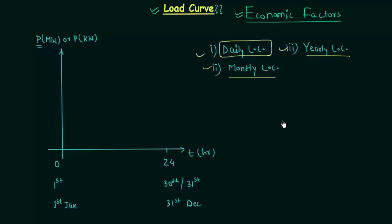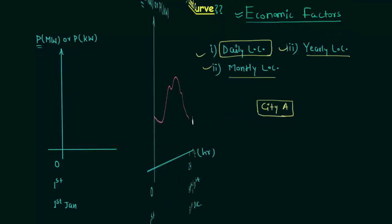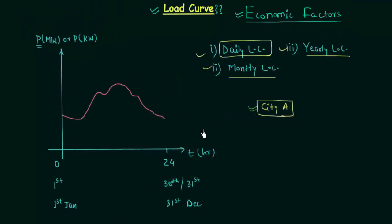Now I will plot the daily load curve for city A. You can see the load curve of city A from 0 hours to 24 hours — the plot is varying, so the load curve is a variable plot. The power demand varies continuously with time. In the morning you require less power, but as your day starts you need more power. Schools, colleges, offices, and shops open and they require more power, so we have an increment in power demand.